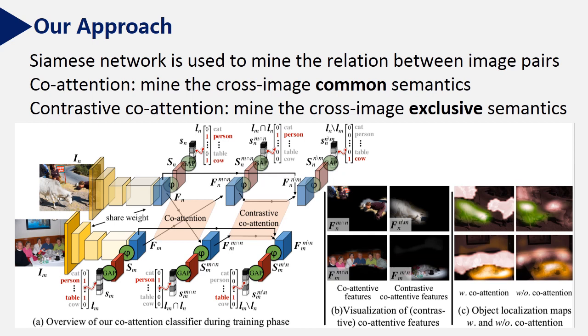And our contrastive co-attention can discover the cross-image unique objects. For image im, the class is cat, and for image in, the class is table. As shown in the localization maps, by combining both co-attention and contrastive co-attention, more accompanied image regions are discovered.